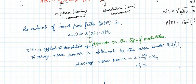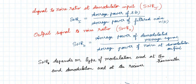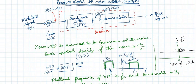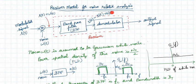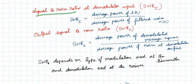In the next videos, we will be discussing the double sideband suppressed carrier receiver, double sideband, single sideband receiver, and noise analysis for frequency modulation. For now, this is just the model. One measure is the signal-to-noise ratio at the demodulator input — SNR_I. At the demodulator input we have signal s(t) and noise N(t), so SNR_I = average power of s(t) divided by average power of filtered noise N(t).